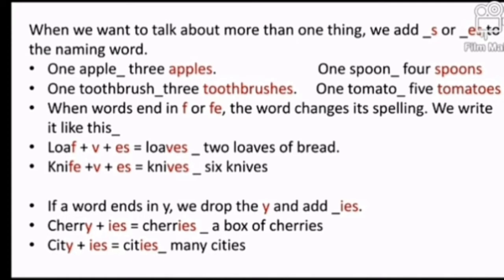When words end in F or FE, the word changes its spelling. Agar last mein F ya FE ho, toh poora spelling change ho jayega. Agar last mein F ho, toh F nikaal kar V lagayenge plus ES. For example, knife: FE ko nikaalkar V plus ES lagayenge — knives.